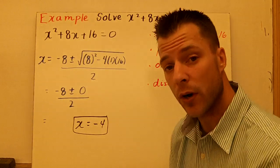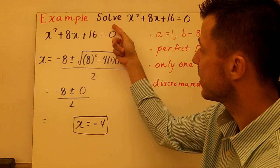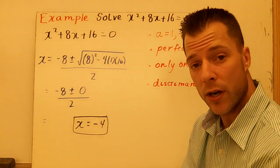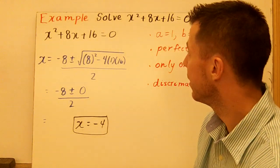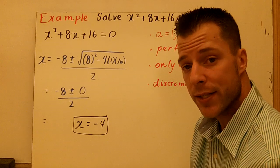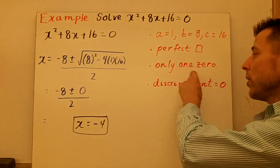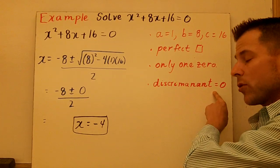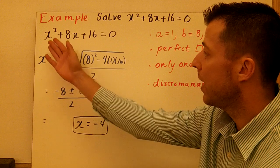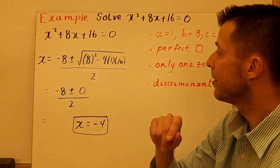Let's look at where we have one real solution. In this example, x squared plus 8x plus 16 equals 0. All the terms are on one side. I noticed really quickly that two numbers that multiply to be 16 and add to be 8 are 4 and 4. This is a perfect square trinomial. So there's only going to be one zero, and the discriminant is going to be 0. I've identified A, B, and C. A is 1, B is 8, C is 16.